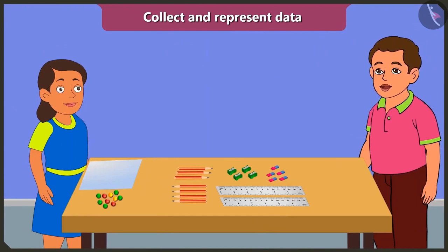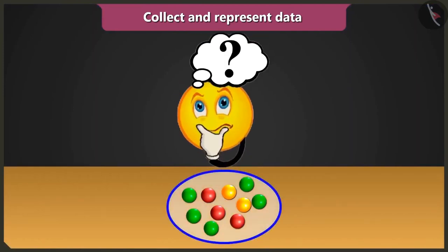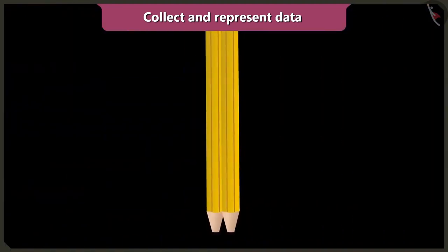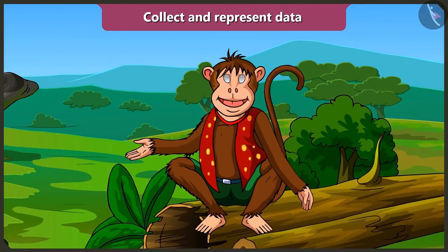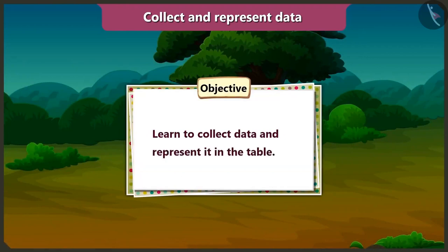Hey Bubbly, what are you doing? Bunty, I have ten marbles. I am trying to find out how many marbles of each color are there. Come on, let me teach you an easy way to find that. Today in this video, we will learn about collecting data and representing it in a table.